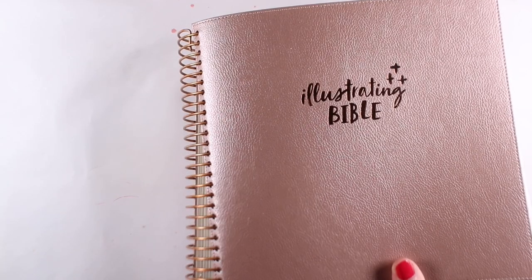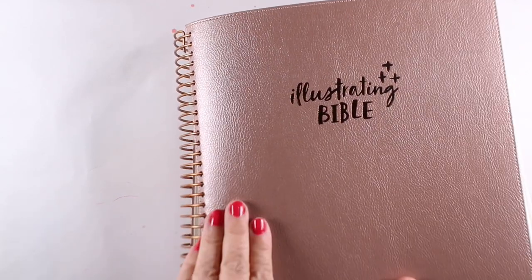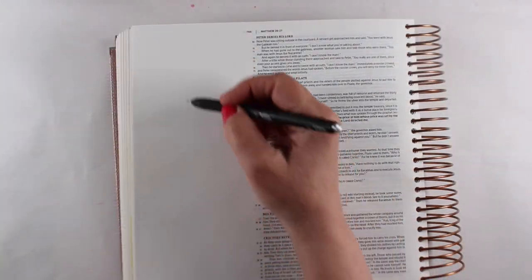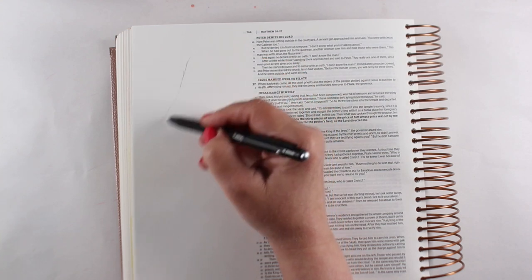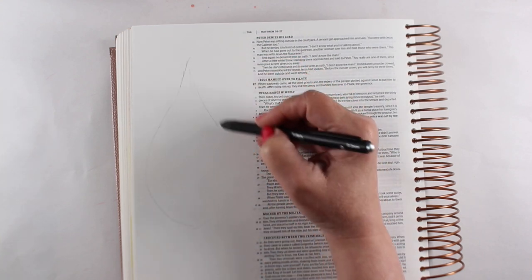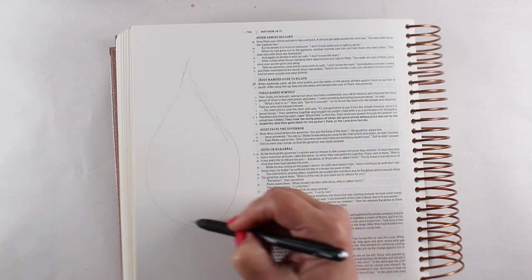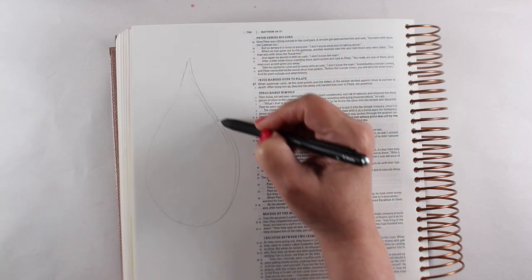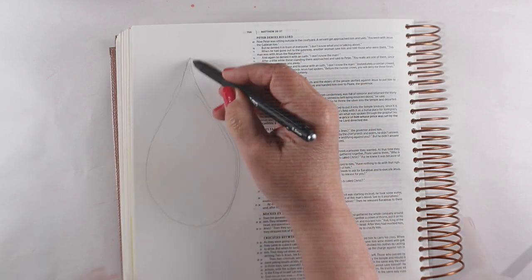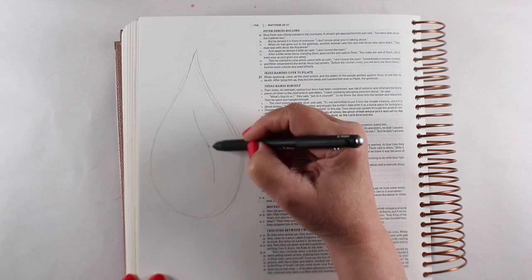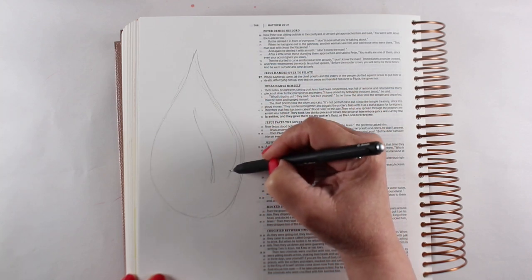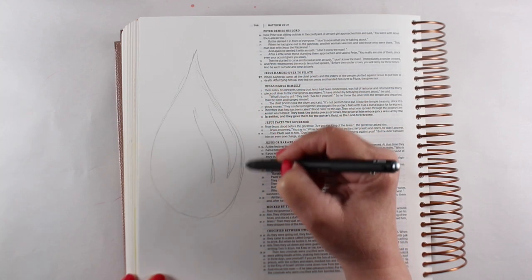And you could illustrate a page like this in a bunch of different places. I'm going to turn to Matthew 27 in the Illustrating Bible and do it in colored pencil. Now, this particular Bible has a wider column, which is nice. It has a different paper than most Bibles, so it works great with colored pencils. It doesn't work very well at all with watercolor, which is one of the reasons I don't use it very often.